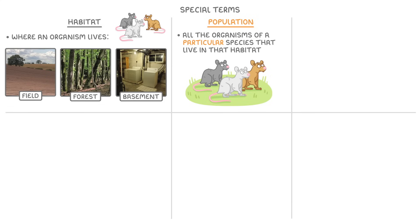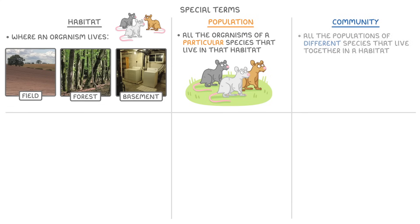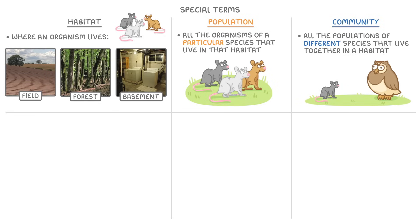Next, we have the community, which is all the populations of different species that live together in a habitat. So the community would involve not only the mice, but also the owls, the plants, and any other organisms that live in that field.